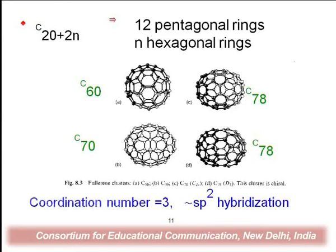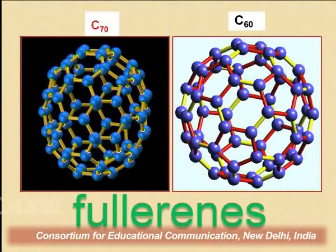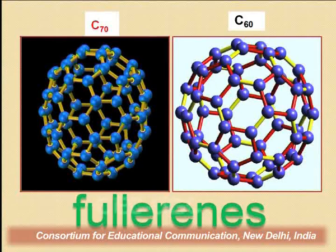The general formula for fullerene is C(20+2N), where there are 12 pentagon rings and N hexagon rings. N can be varied to form various fullerene clusters. C60 and C70 are the most prominent. The coordination number for C60 and C70 is 3, and they have SP2 hybridization. C70 has an ellipsoid structure like a rugby ball, while C60 looks like a soccer ball. All are called fullerene.